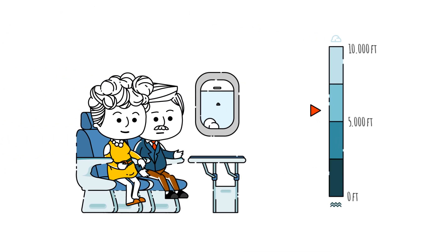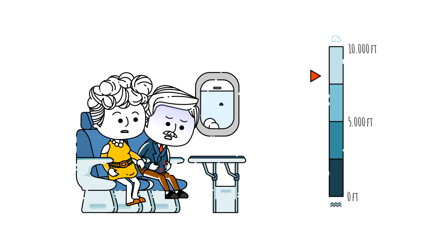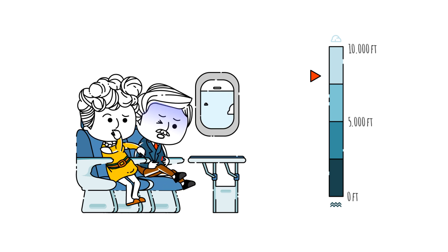As the plane passes 8,000 feet, Oscar starts to feel bad. His gut bloats and cramps. He desperately waits for the captain to turn off the seatbelt as Olivia watches on in horror.